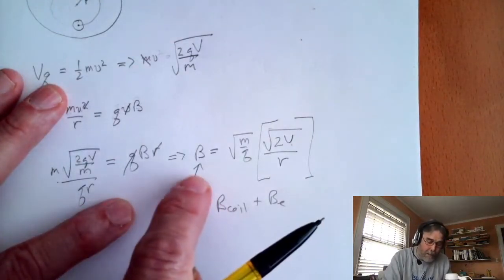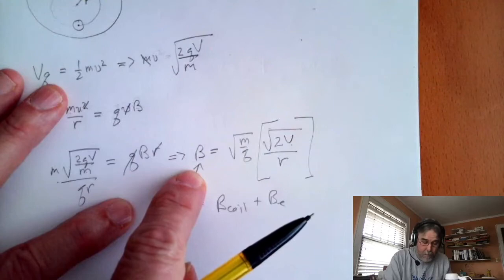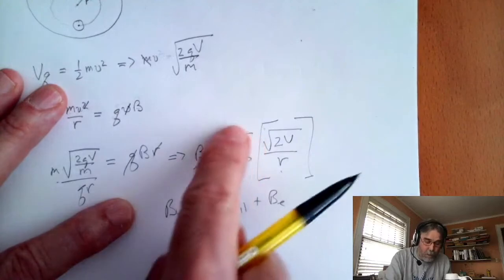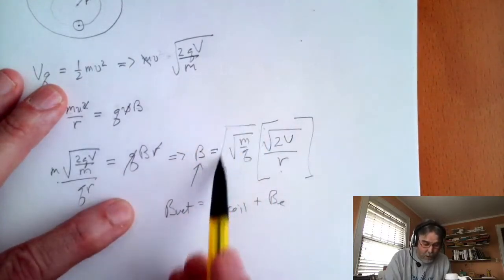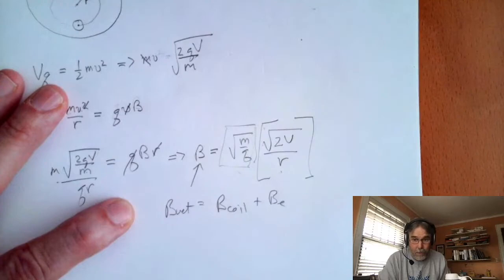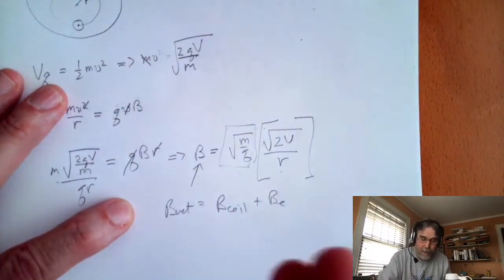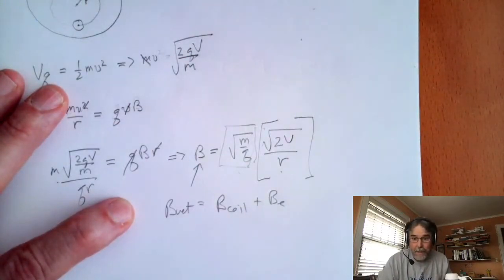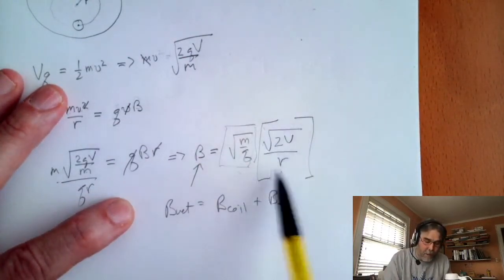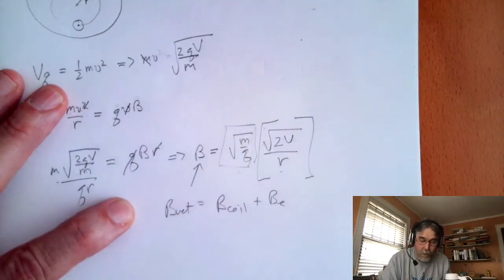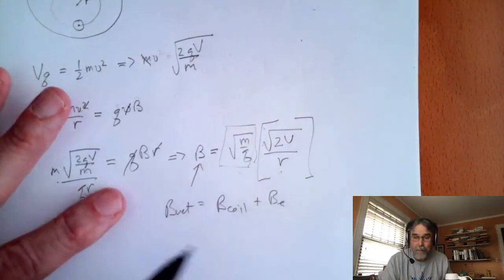If we graph B calculated from the current versus √(2V)/r, we get a straight line with slope equal to √(m/q). We know q, so if we figure out √(m/q) from the slope, we can plug in the known charge q and get out the mass of the electron. The radius of the trajectory is measured, and the potential is 29.5 volts, so we know that too. That's the idea — I hope that helps, and we'll talk to you soon.